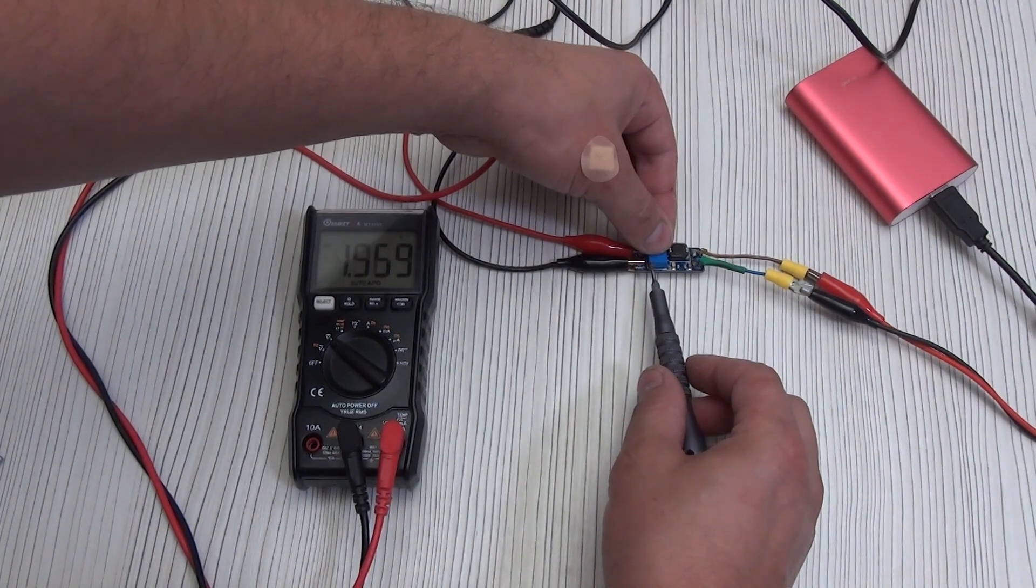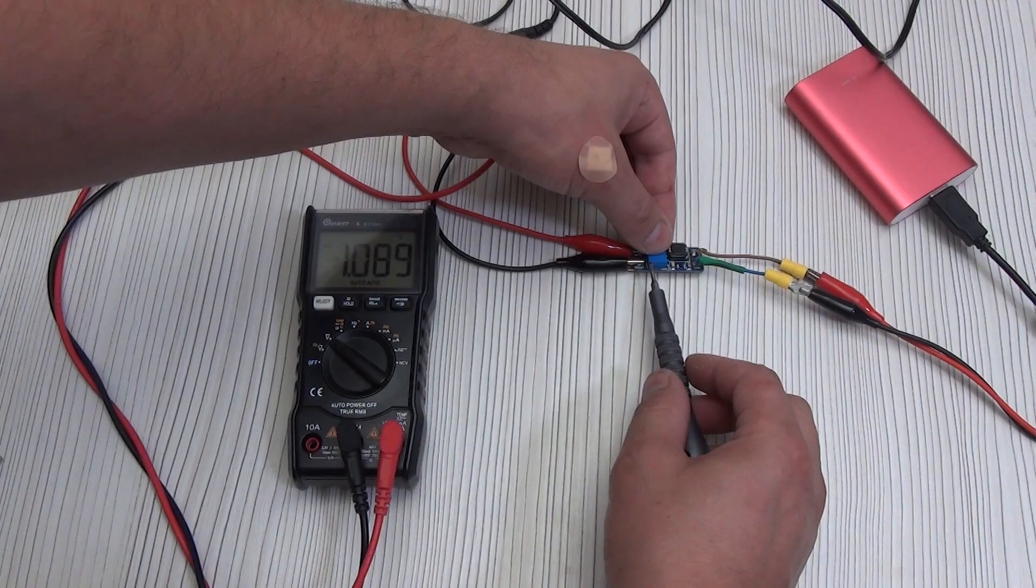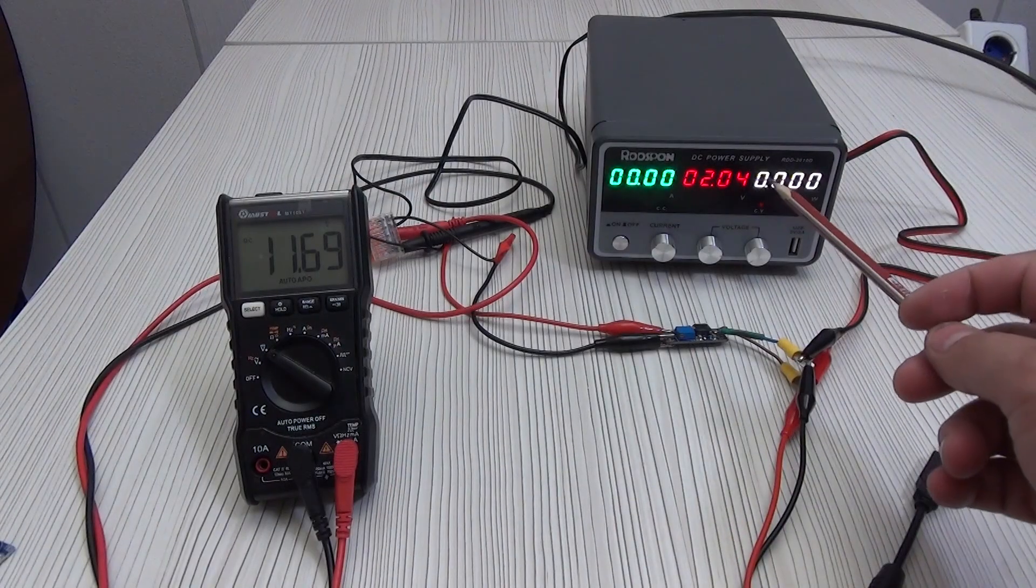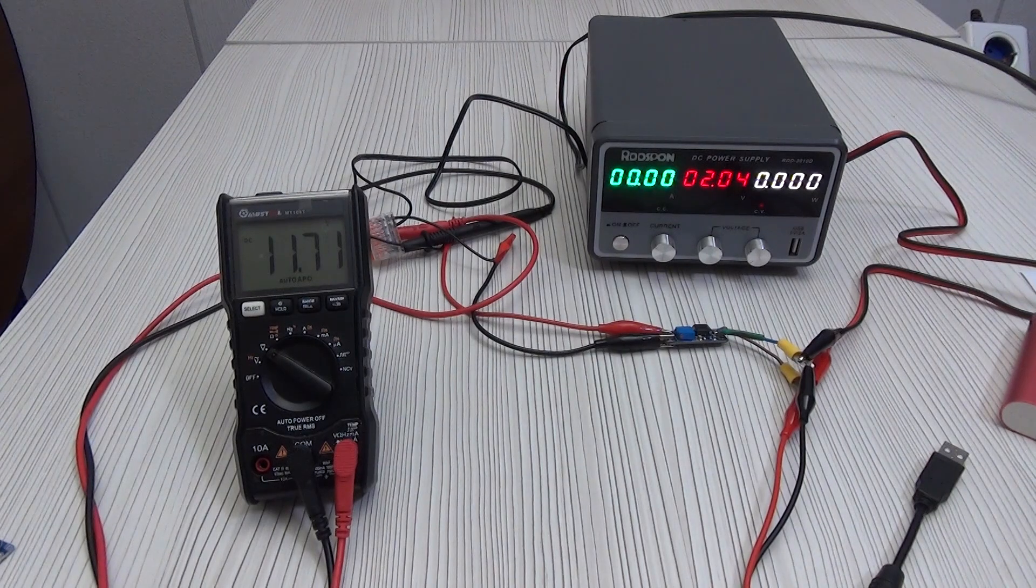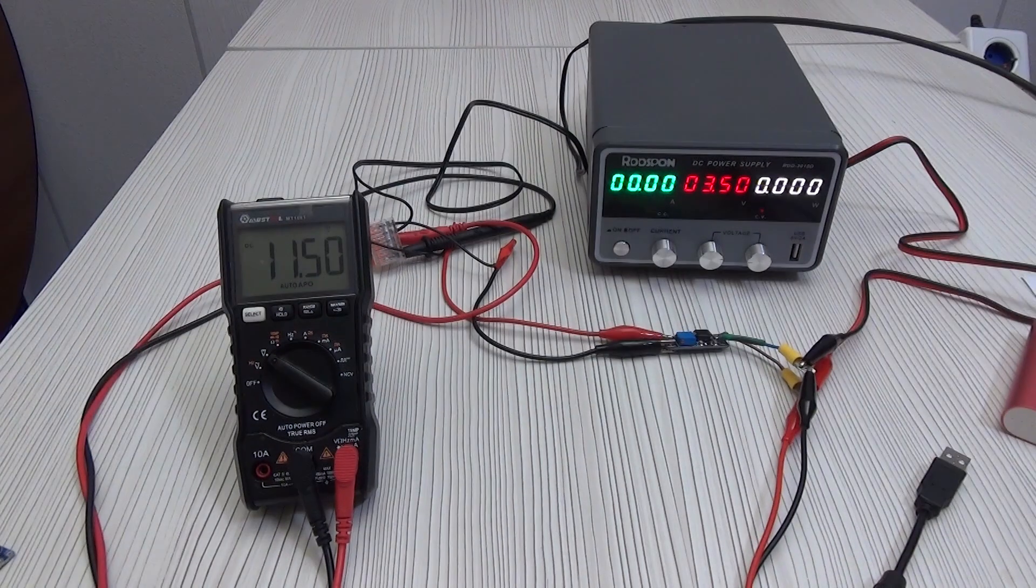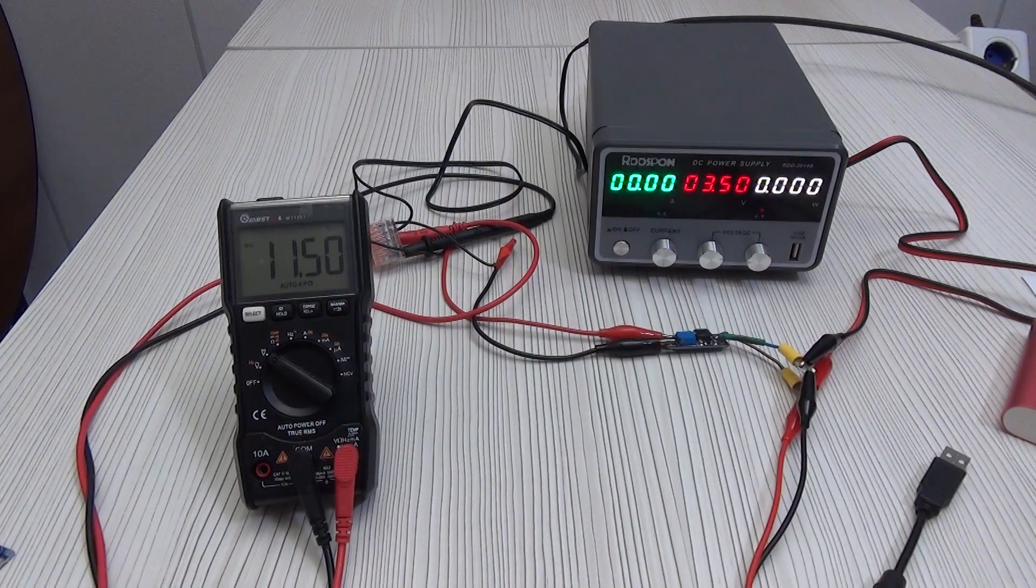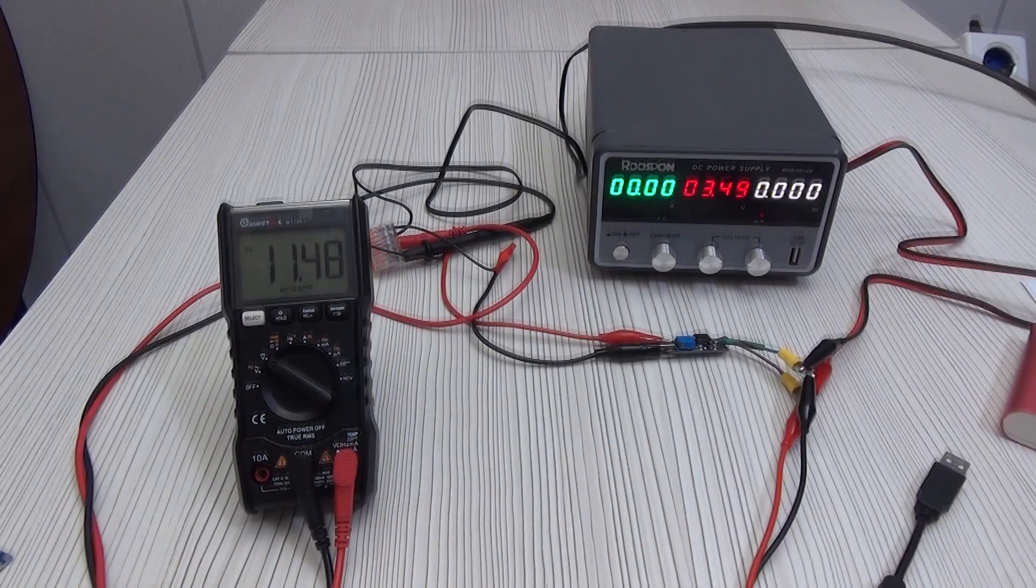The multi-turn resistor has a resistance of 100 ohm. The minimum input voltage is 2 volts, but 3.5-4 volts are better. As you can see, with a voltage of 3.5 volts, we get 11 and a half volts at the output.